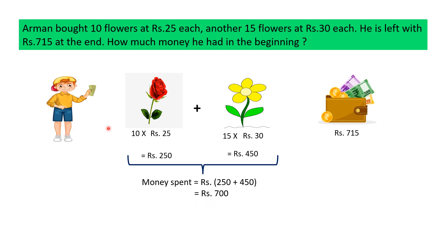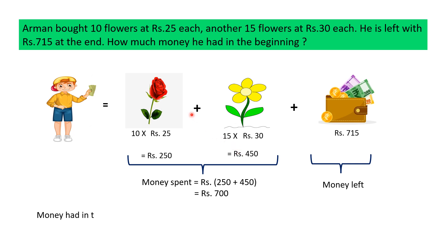So, Arman had some money and from it he spent Rs. 700 on buying flowers, and he is still left with Rs. 715. The question is, how much money did he have in the beginning? Money he had in the beginning equals money spent plus money left. So, money he had in the beginning is equal to Rs. 700 plus Rs. 715, which is equal to Rs. 1,415.